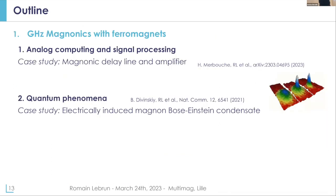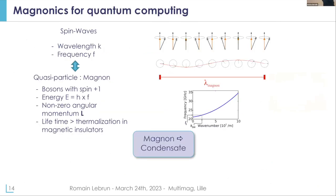Now I will show you why people think we can also use spin waves to develop some hybrid quantum devices. When we talk about spin waves, we can describe them by their wavelength or frequency, but we can also describe them as magnons, which are quasi-particles associated to a spin wave. Those magnons are bosons with a spin of plus one, they carry angular momentum, and in magnetic insulators the lifetimes of the magnons can be larger than the thermalization time of the magnons.